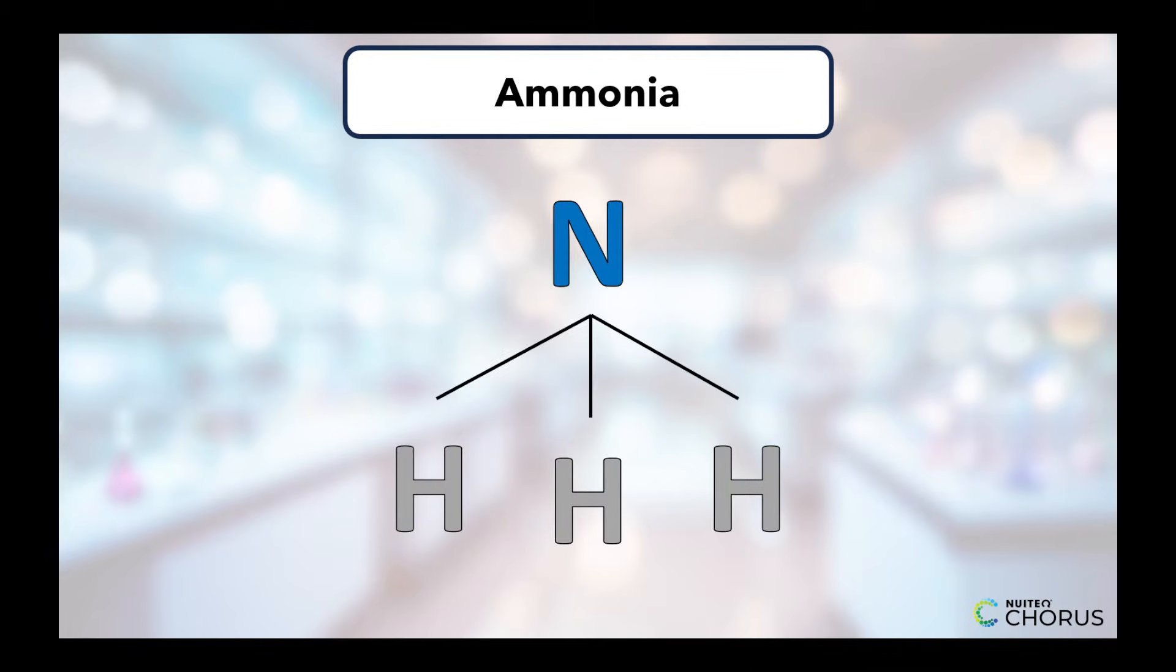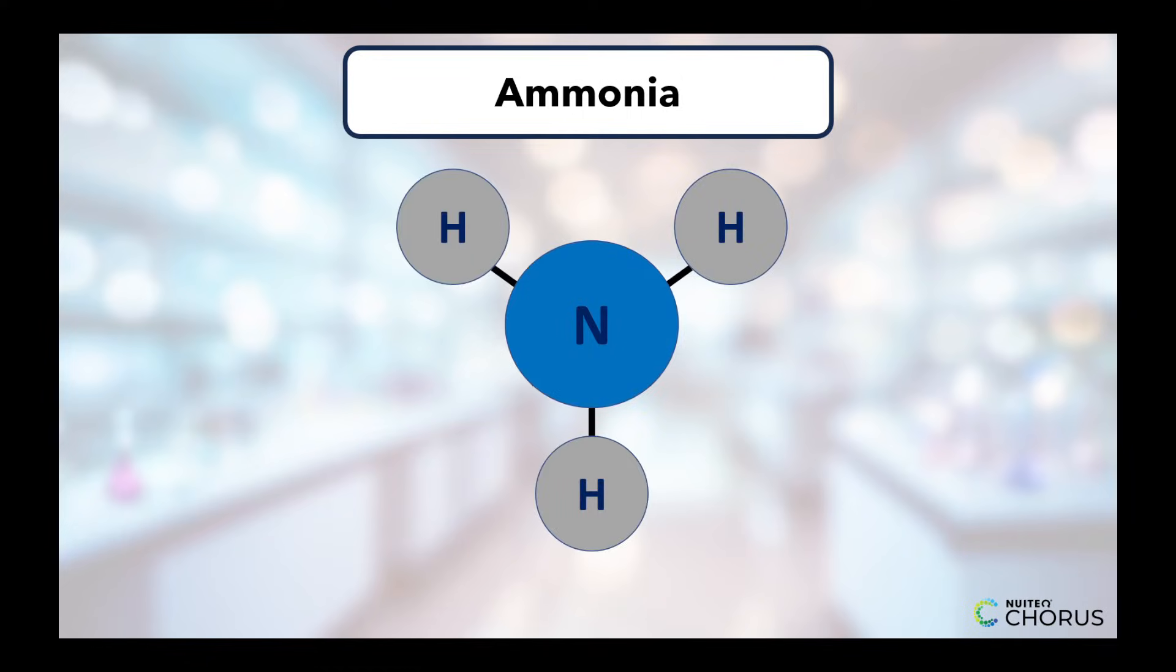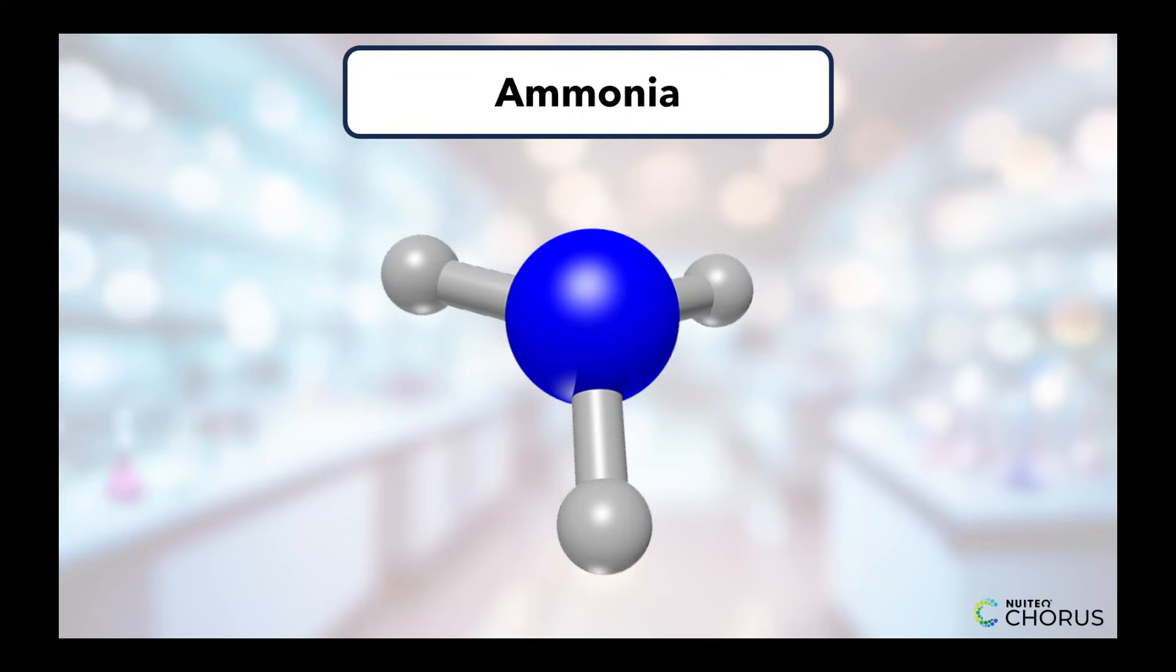For example, to create a model of ammonia, you would need three atoms of hydrogen and one atom of nitrogen. When you put these atoms together, you can see the way the atoms are arranged, and this is the structural model of ammonia molecule.